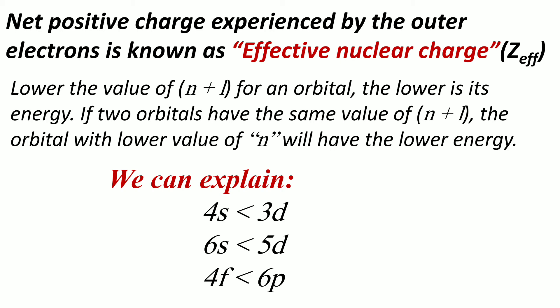The lower the value of n plus l for an orbital, the lower is its energy, where n is the principal quantum number and l is the azimuthal quantum number. If two orbitals have the same n plus l value, the orbital with the lower value of n will have the lower energy.